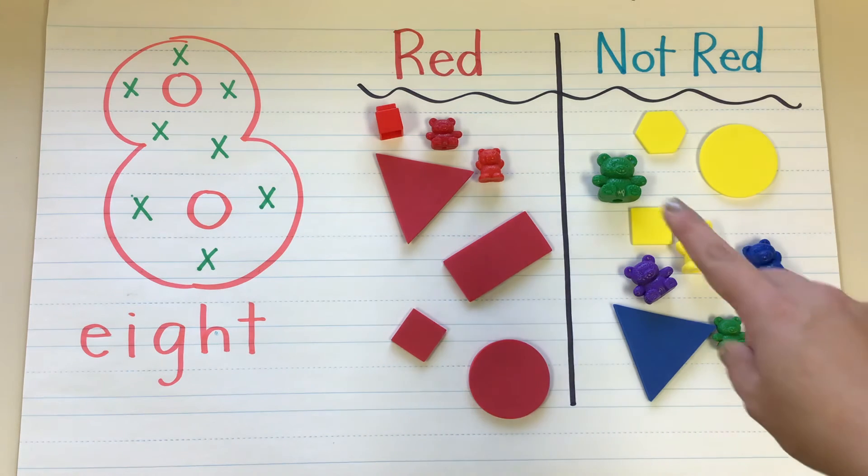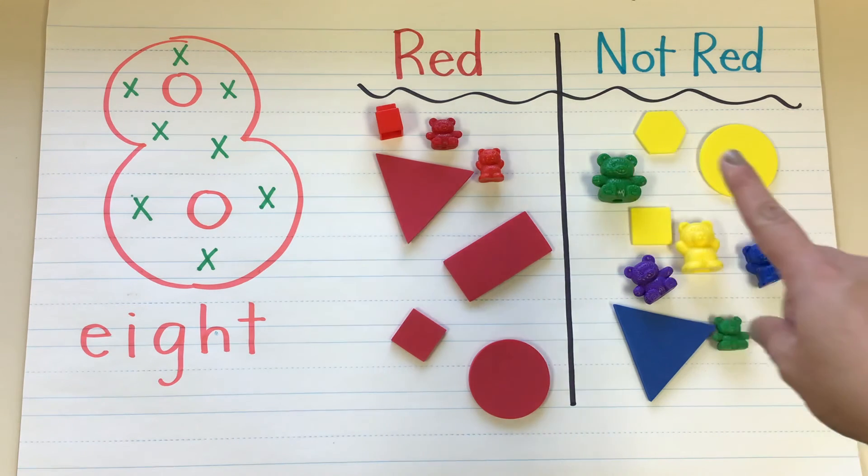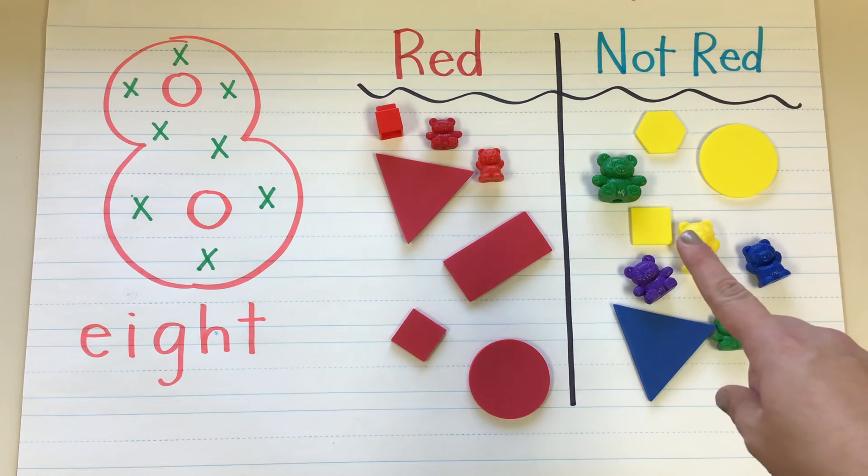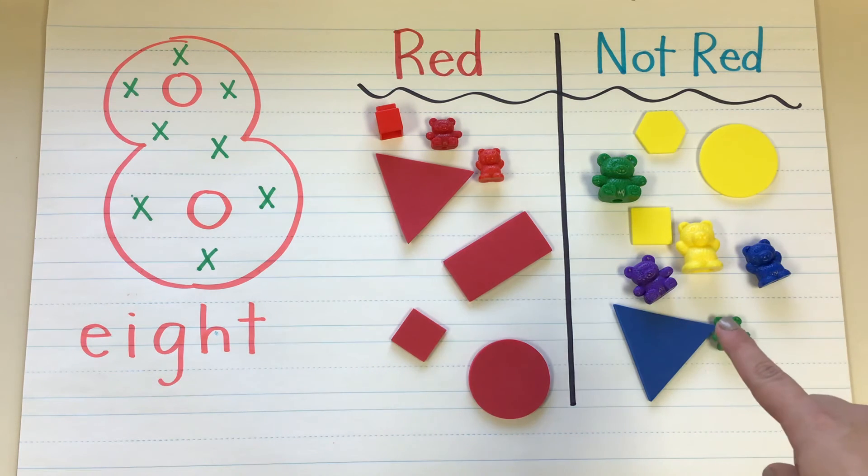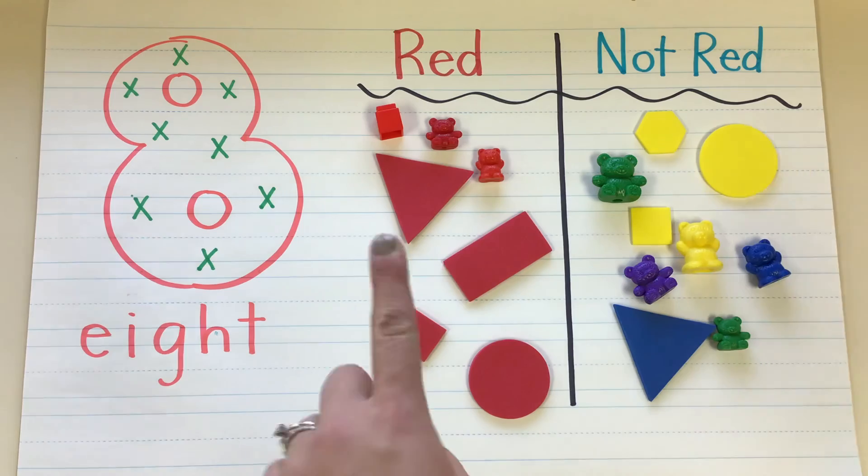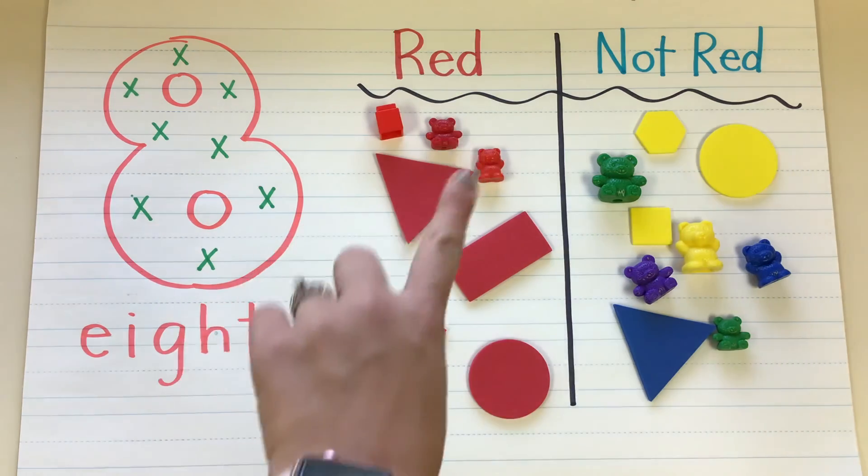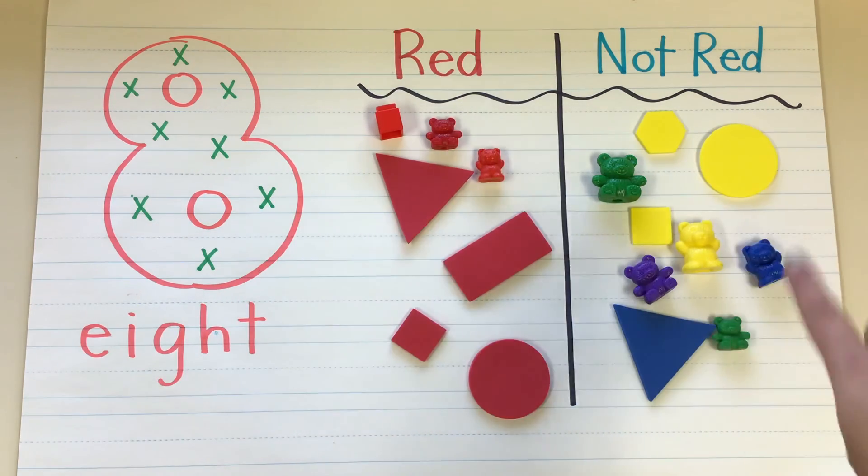Let's see how many weren't red. One, two, three, four, five, six, seven, eight, nine. So we had seven objects that were red and nine objects that were not red.